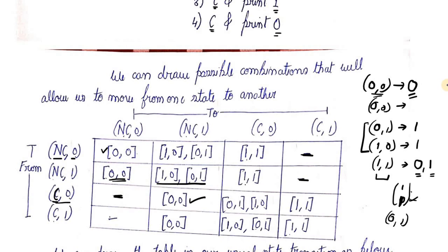We can get carry,0 from carry,0 if the input is 0,1: the carried 1 adds up, giving output 0 but carrying 1 forward, so we remain in carry,0. If we put 1,1 then 1+1+1 equals 3, which in binary is 1 with a carry of 1, so we go to carry,1. The same logic holds for carry,1. We are finally able to complete the state transition table.